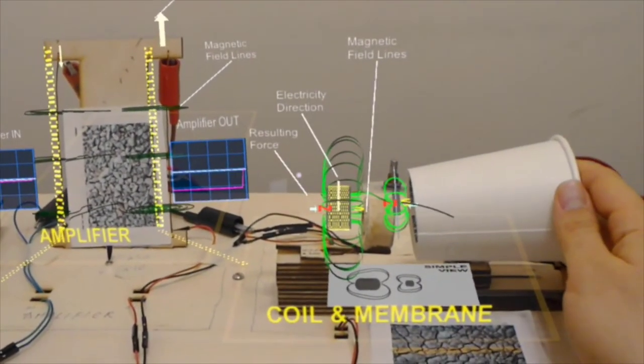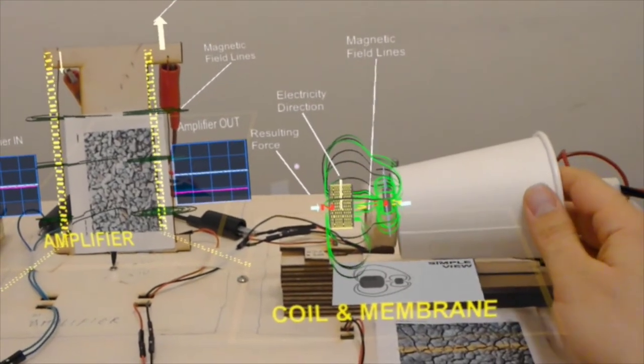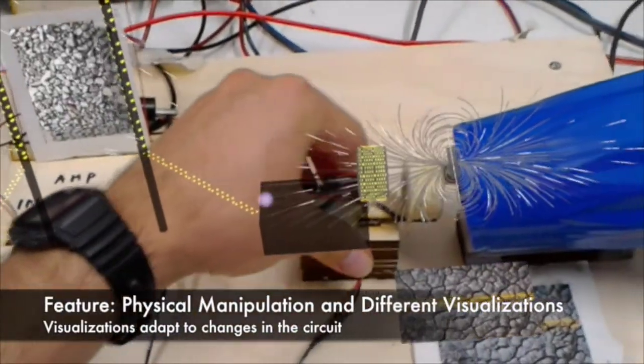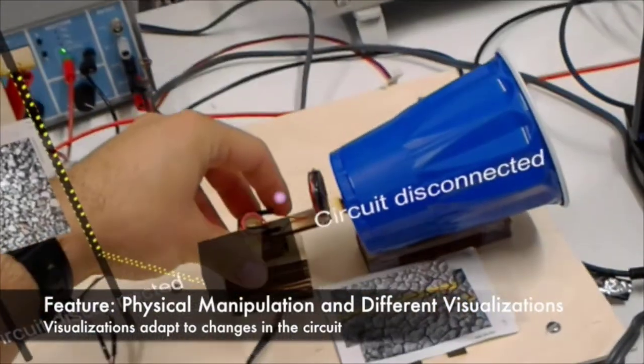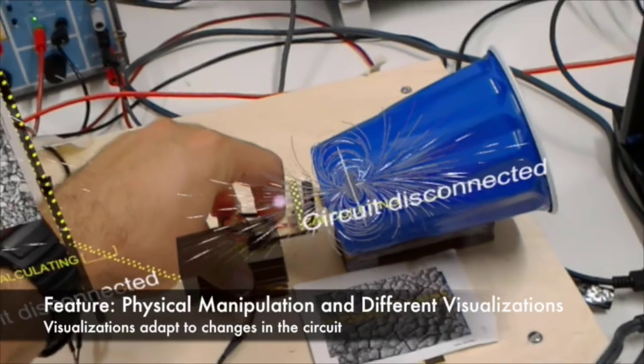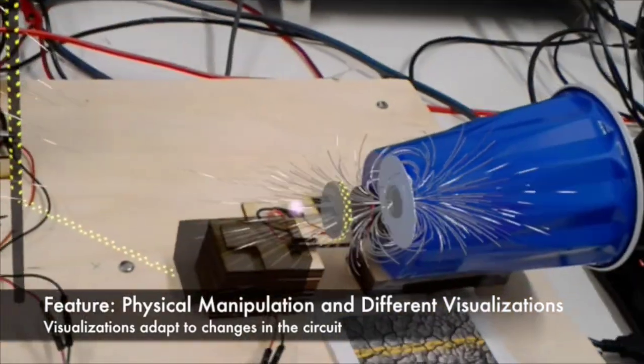For example, in this case, we're bringing these objects closer and the magnetic fields are merging. The system is also made so that it responds to changes in the objects. We can change this coil to the smaller one, and now the visualization is being updated.